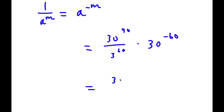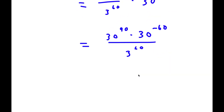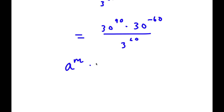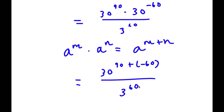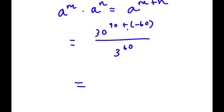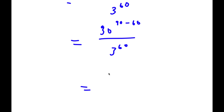Now I can write this as 30 to the power of 90 times 30 to the power of negative 60, over 3 to the power of 60. If I have something in the form a to the power of m times a to the power of n, this equals a to the power of m plus n. So 30 to the power of 90 times 30 to the power of negative 60 equals 30 to the power of 90 minus 60, which is 30 to the power of 30, over 3 to the power of 60.